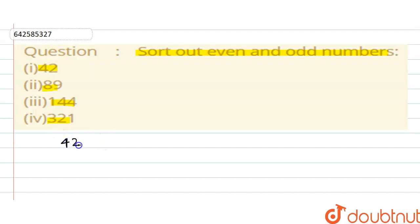Then first number will be 42. So unit digit of 42 will be 2, and 2 is even, so 42 is the even number.